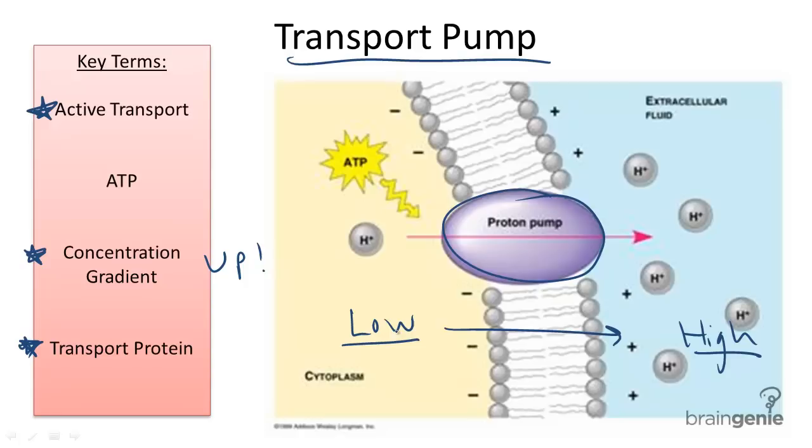When we move from a low to a high concentration, ATP is required. ATP is required because it is more difficult to move substances from a low concentration to a high than it is from a high to a low.